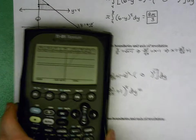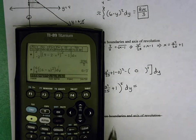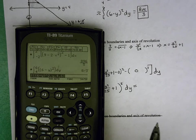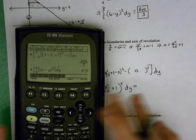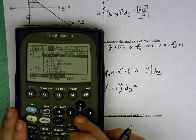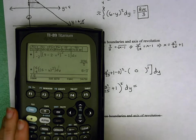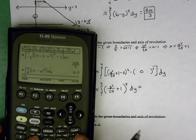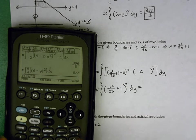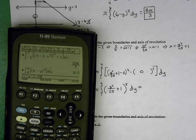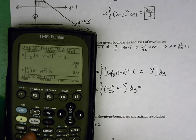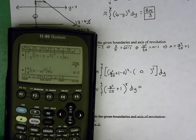We go to our home screen. Again, 84s, you hit math, go up to number 9, which is fn int for integral. And then 89s, we hit F3, number 2. We type in y squared, parenthesis, y squared over 25 plus 1, quantity squared, comma y, comma 1, comma 4.